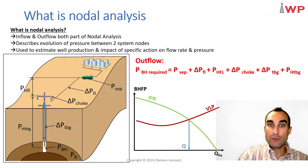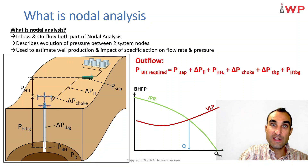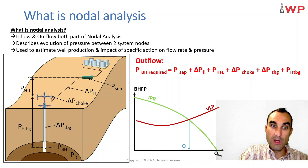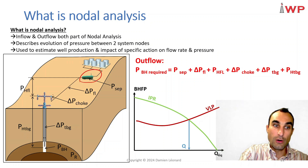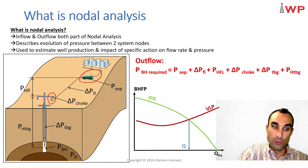Node analysis is used to estimate well production and the impact of specific actions on flow rates and pressure. For instance, I will use node analysis to estimate what is going to be the impact on the production of my well if I were to increase the separator pressure or close my choke a little bit.